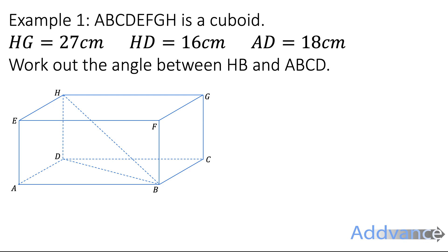Let's look at our first exam question. It says ABCDEFGH is a cuboid. HG is 27cm, HD is 16cm, and AD is 18cm. So let's label those straight away. Work out the angle between HB and ABCD.